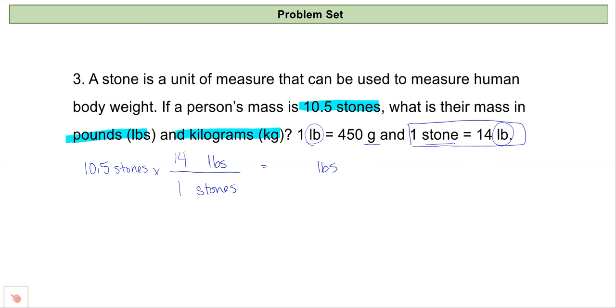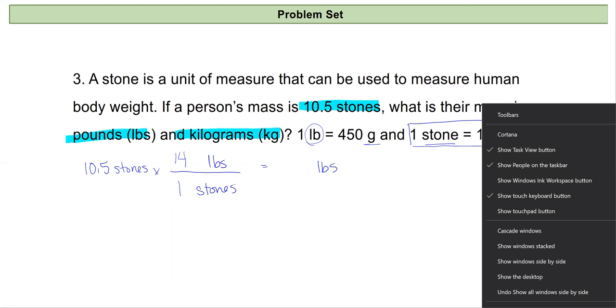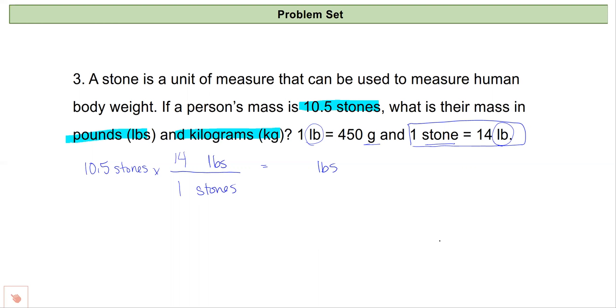So I'll multiply 10.5 by 14 in my calculator, and my units will cancel so I only have pounds. And I get 147.000 and it goes on. I have three significant figures to start with, so I'll report three significant figures. And my final answer would be 147 pounds.